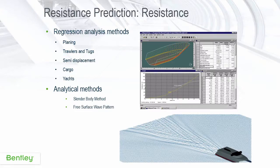For resistance prediction, we offer two methods: regression methods for conventional vessels, whether they be planing or power displacement vessels, and also an analytical method which can analyze slender body hulls and produce a visualization and data on wave and wake generation.